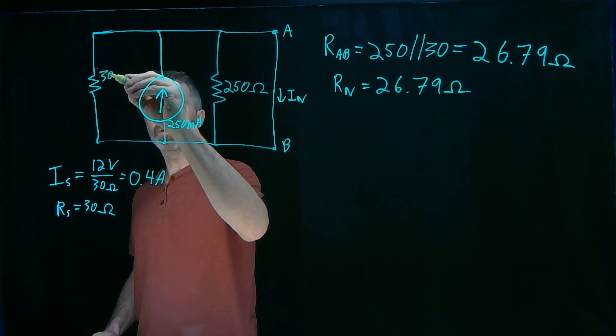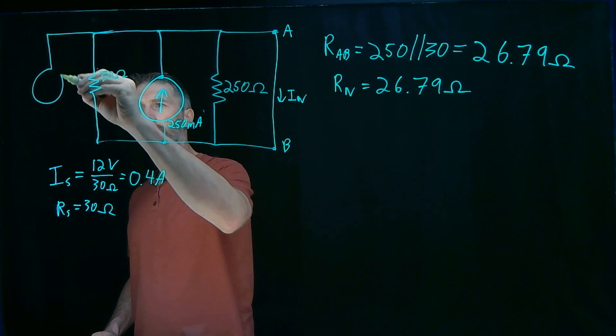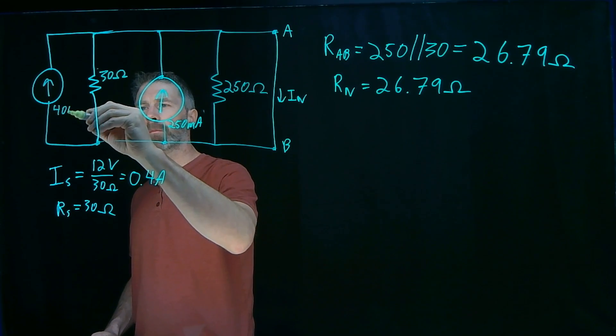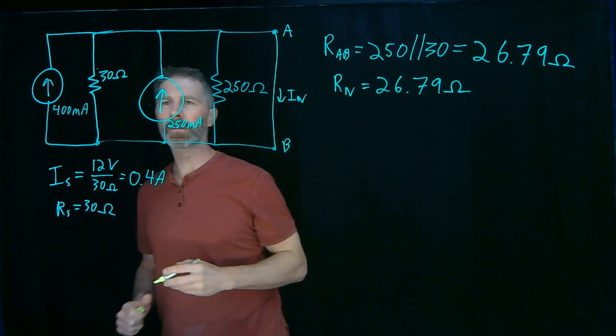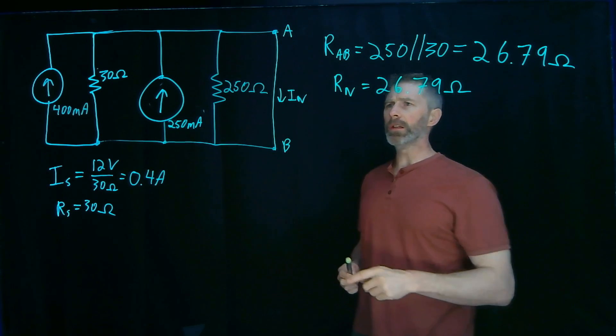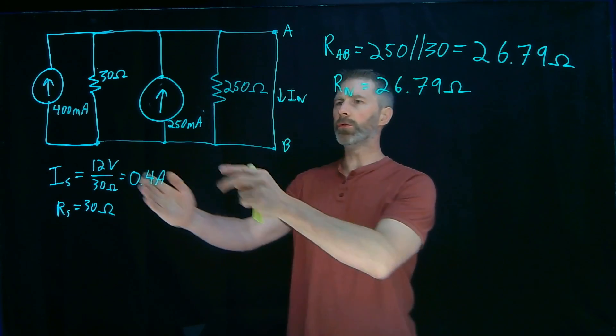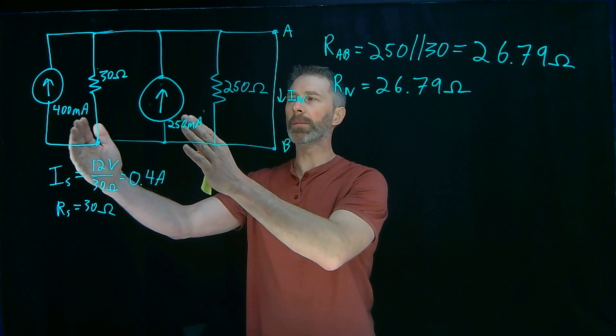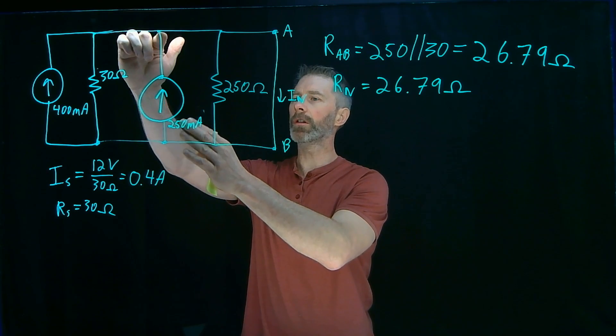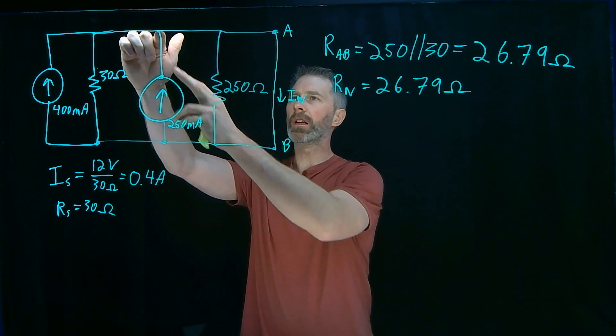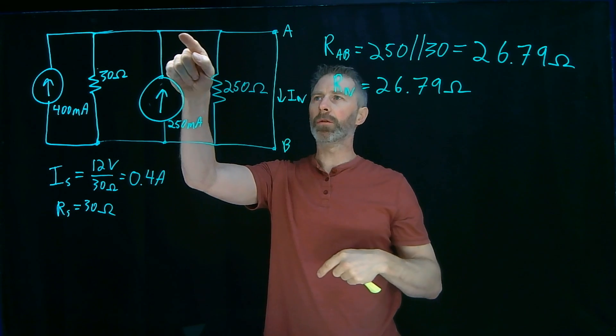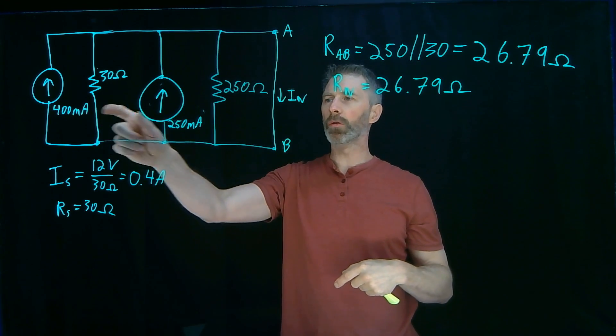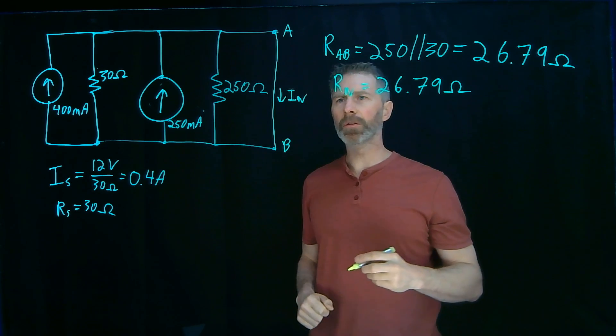That consists of the 30 ohm resistor in parallel with the 400 milliamp or 0.4 amp current source. Now the analysis is pretty easy. This is a short circuit here. I have two current sources in parallel, so the total current from them is going to sum together. I'll have 400 milliamps going here, 250 milliamps joining it at this node. That current is not going to go through either one of those resistors because I have a short circuit here. So that current is just going to flow between A and B. So it's 400 plus 250. I have 650 milliamps.